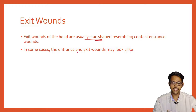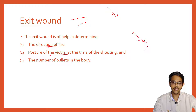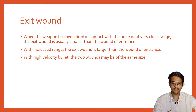Exit wounds of the head are usually star-shaped, resembling contact entrance wounds. In some cases, entrance and exit wounds may look alike. Exit wounds help in determining the direction of fire, posture of the victim — where the bullet entered and exited tells where the person was positioned — and also the number of bullets in the body.